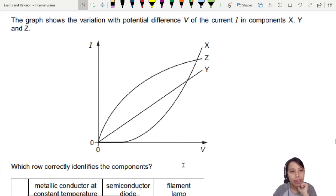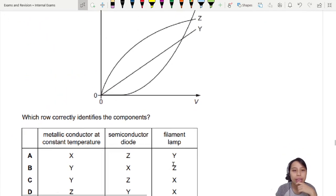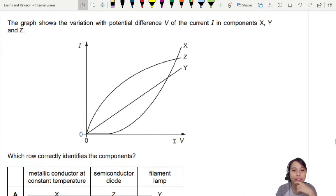Which row correctly identifies the components? So we have a bunch of choices. This is confusing. I'm not gonna look at that. Let's stick to this. We have a choice of metallic conductor, a semiconductor, and a filament lamp.